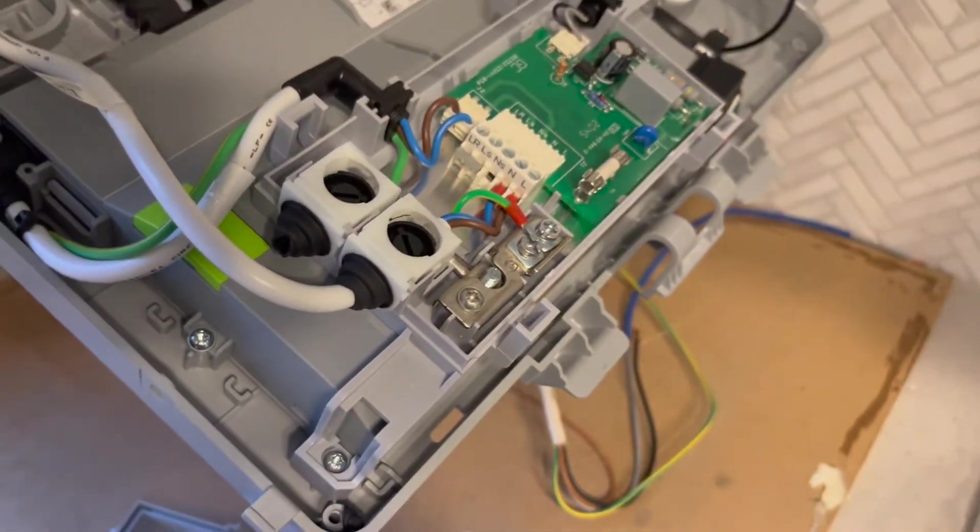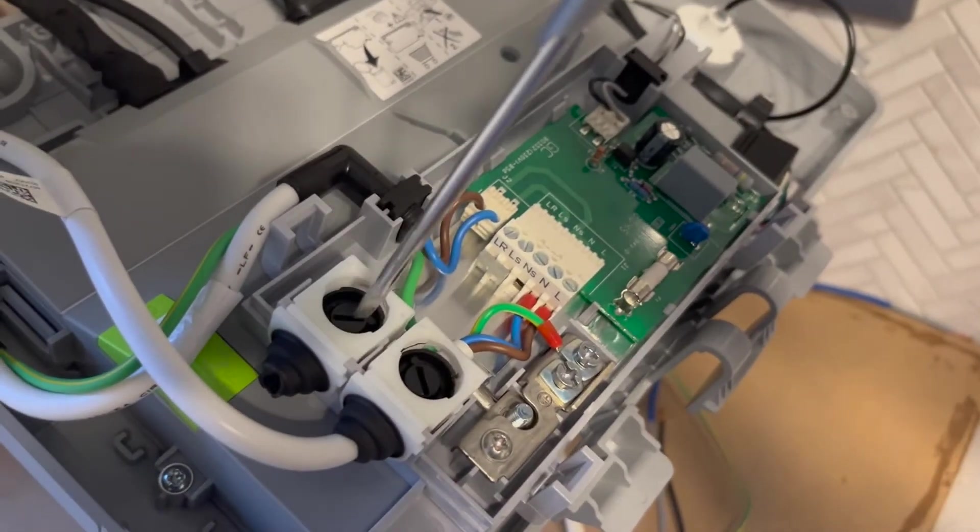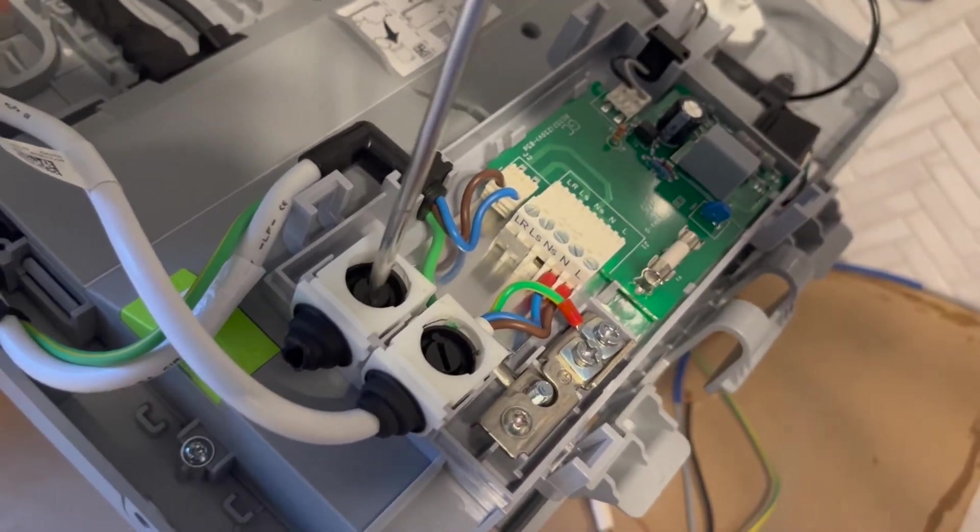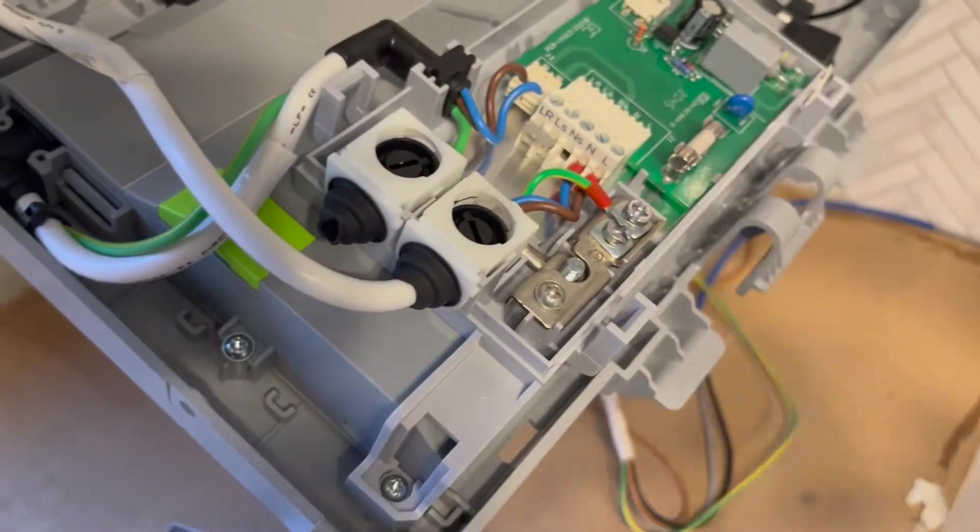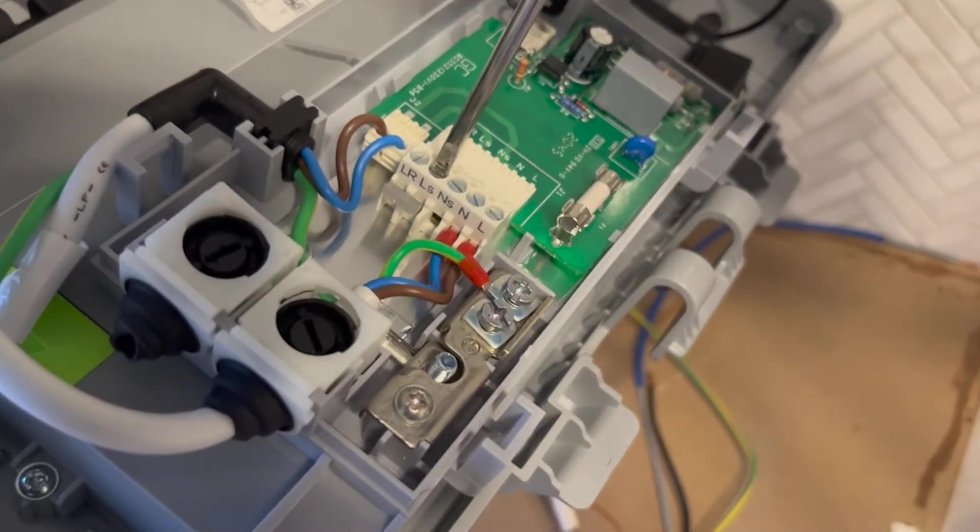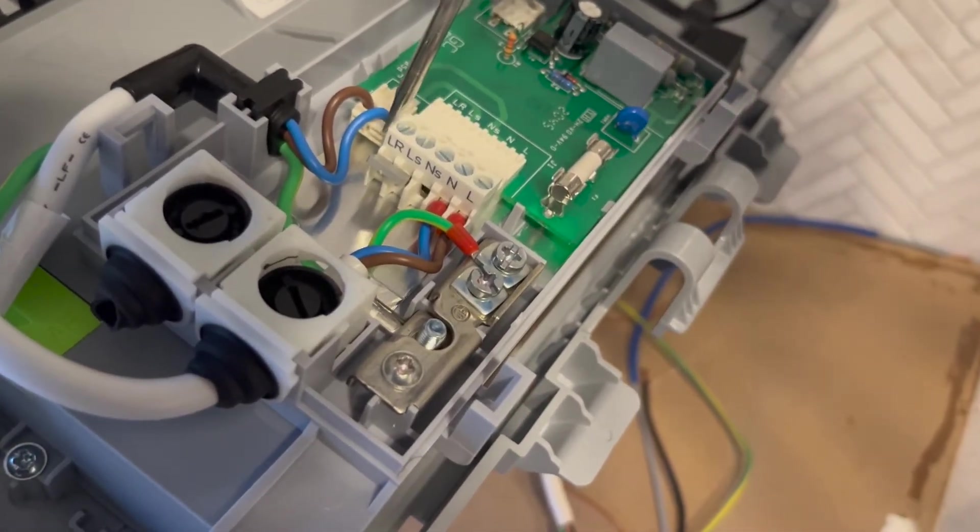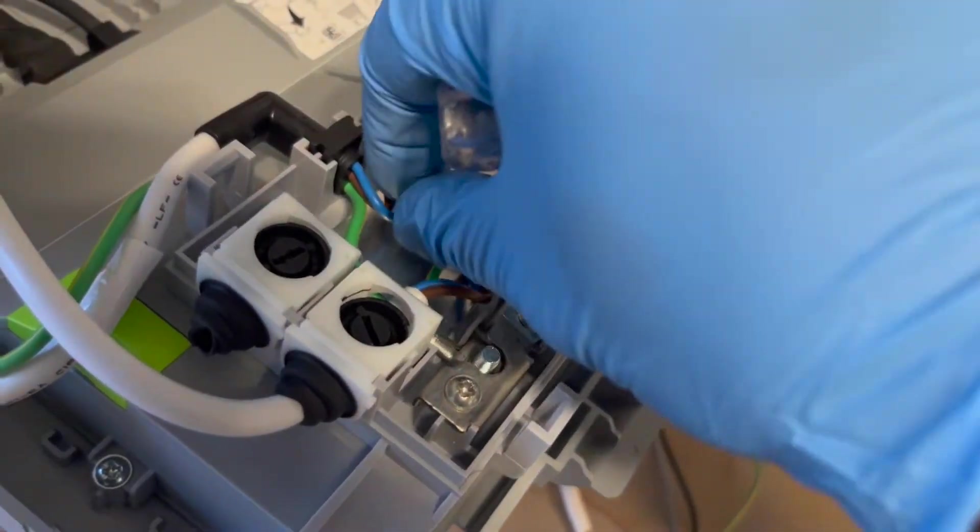It's a bit hard to see, but there's currently a link between LR and LS. I'll loosen those two screws and that link should come out now, because we'll be replacing that with the thermostat.